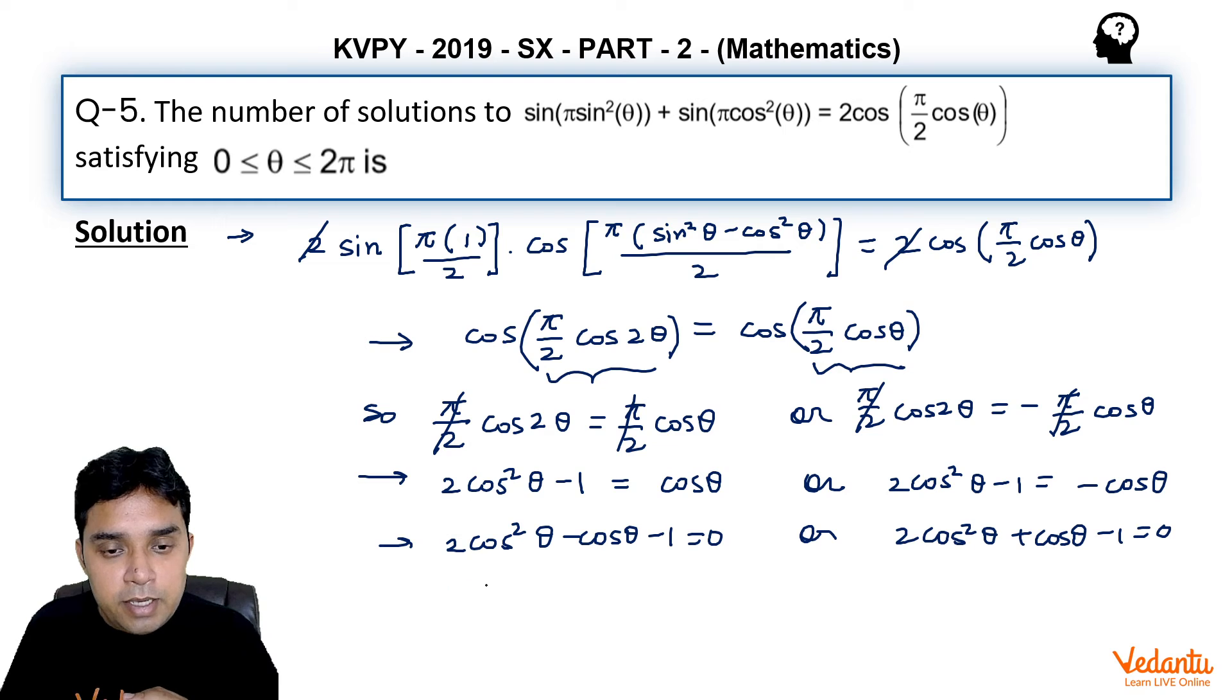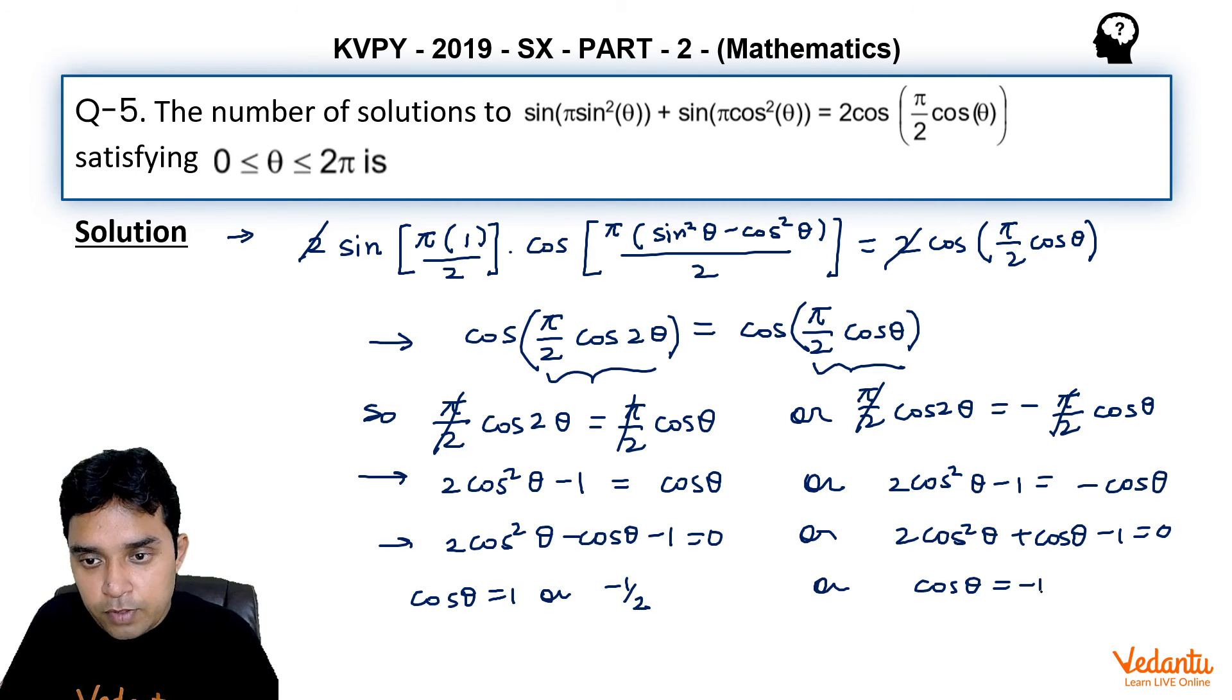We can easily see that cosθ = 1 is one solution of this one, and the other solution will be -1/2. We can do it by product of roots or by sum of roots. And here cosθ can be -1 as one root, and the other root will be 1/2.